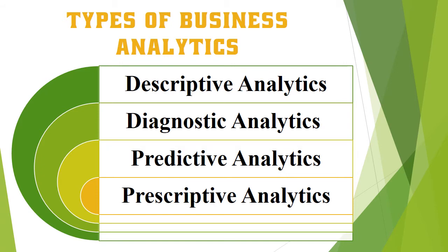Business analytics is of four types. The first is descriptive analytics, which summarizes an organization's existing data to understand what has happened in the past or is happening currently. It makes data more accessible to stakeholders such as investors, shareholders, marketing executives, and sales managers. It helps identify strengths and weaknesses and provides insights into customer behavior. This type of analytics typically answers the question: what happened?